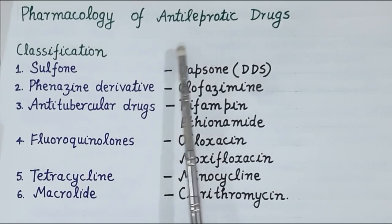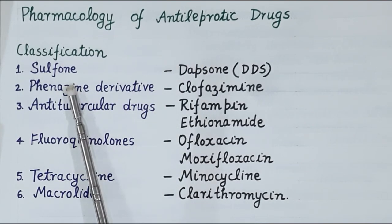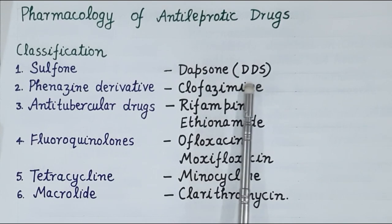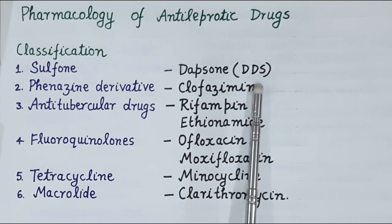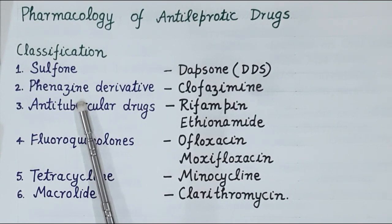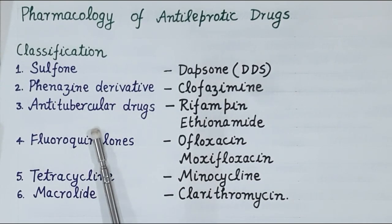Now let's classify anti-leprotic drugs used in the treatment of leprosy. Anti-leprotic drugs are classified into six categories. The first category is sulfones, which includes the drug dapsone — dapsone is diaminodiphenyl sulfone, in short DDS. The second category is phenazine derivatives, which includes the drug clofazimine. The third category includes anti-tubercular drugs.